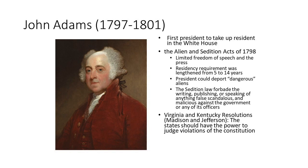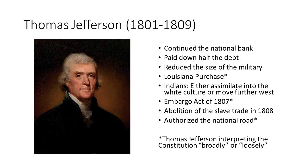The election of 1800 is basically a rematch, and this time Thomas Jefferson will win. This was a dirty campaign — both sides were saying lies about each other, with other people campaigning on their behalf. Jefferson wins this election, and it's known as the Revolution of 1800. The election was in 1800, but he's not sworn in until March of 1801, since the elections are always the first Tuesday after the first Monday in November.